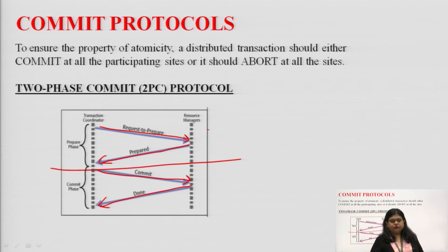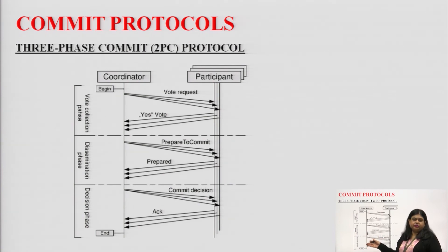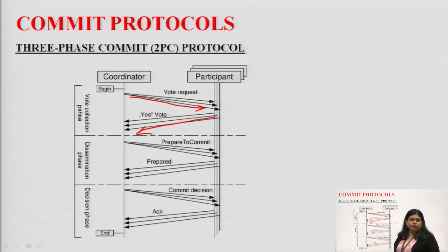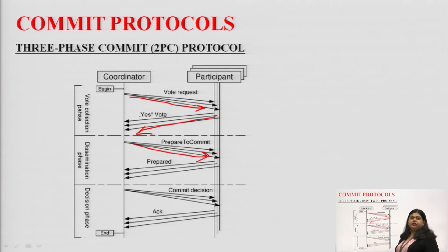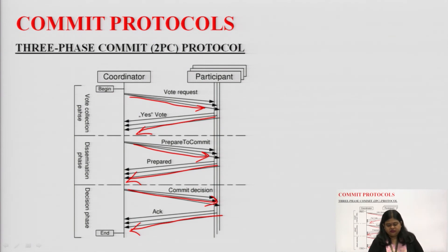We also have an extension: the three-phase commit protocol, which has one extra phase known as the vote collection phase. Before starting the transaction, the coordinator takes a vote from participants on whether they want to participate. The coordinator sends a vote request, and participants send a yes or no. If even one site says no, the complete transaction is aborted. If all participants say yes, they send back confirmation saying they are prepared for the commit. Then a final commit decision and acknowledgement from all participating sites confirms it is done.